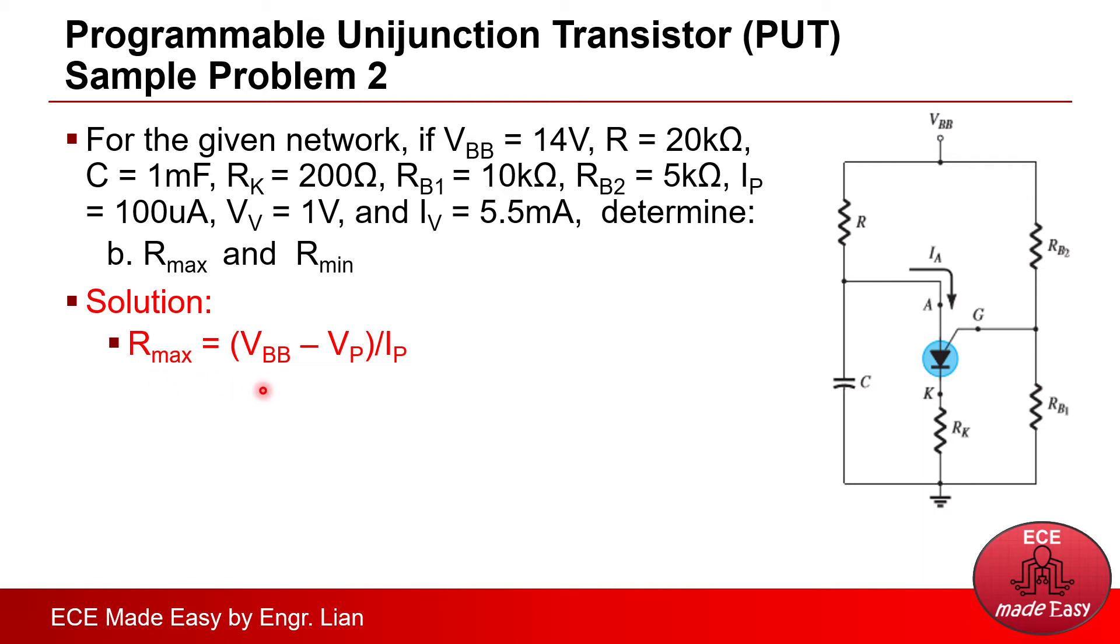And substituting the values, we will be able to solve 39.667 kilo ohms. Take note that the value of VP here is the one that we have solved on the previous item.